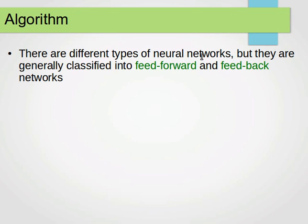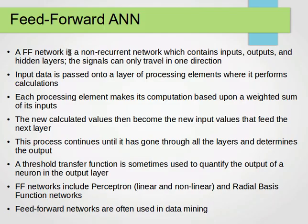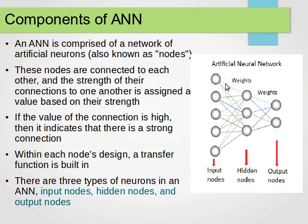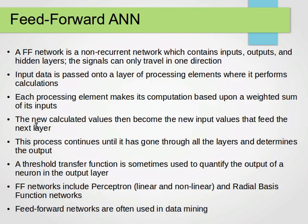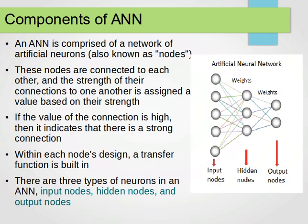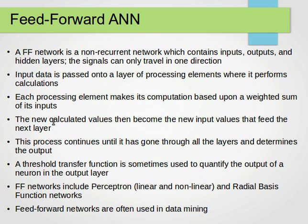Now the algorithm. We have several types of neural networks, but they can generally be classified into feedforward or feedback networks. In a feedforward network, which is a non-recurrent network containing inputs, outputs, and hidden layers, signals can only travel in one direction — from one layer to the next. Input data is passed onto a layer of processing elements where each element makes its computation based on a weighted sum of its inputs. The new calculated values then become the new input values that feed the next layer. This process continues until it has gone through all the layers and determines the output.